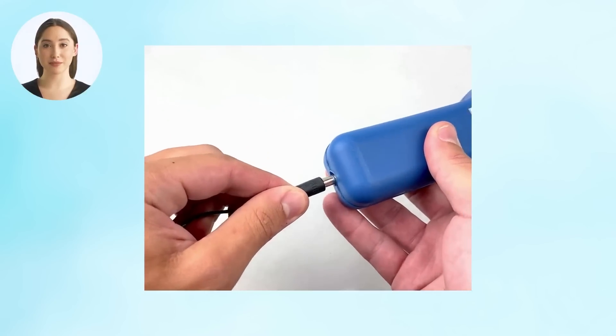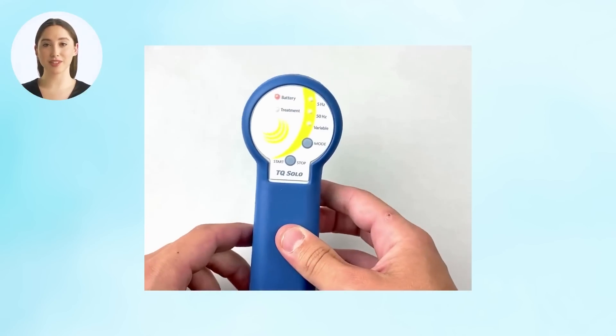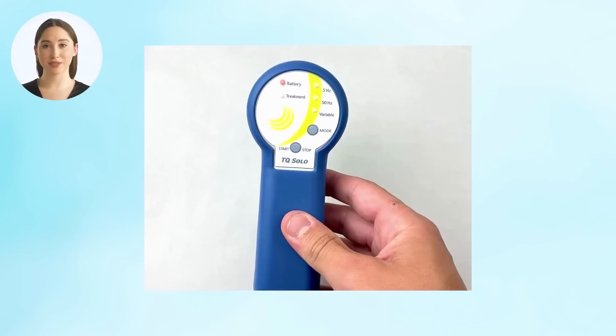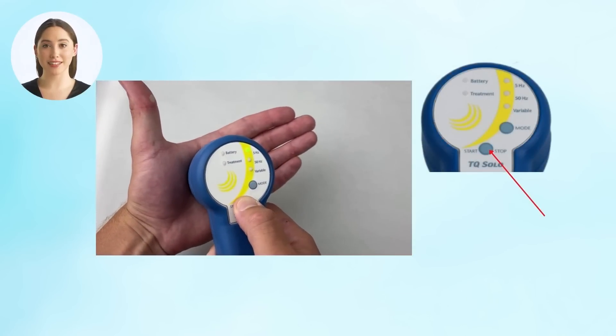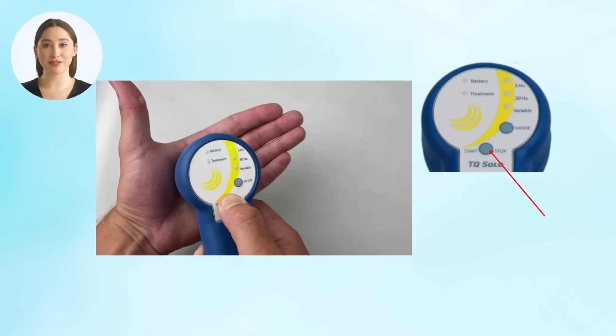Make sure your device is fully charged before use for optimal results. To operate the TQ Solo, hold the start stop button while placing it in the palm of your hand. This will allow the device to self-test and turn on.